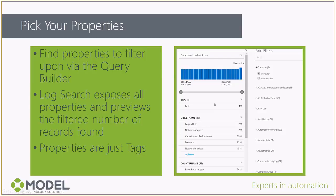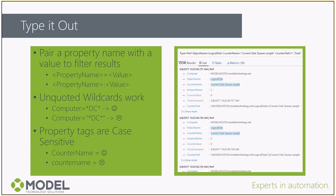The sidebar recommends a list of properties. If the property you're looking for isn't there and you can't recall how it's spelled, there's an Add button that pulls up the full list of filters. As we pick our properties and add them to the filter, we're building out our query. If we want, we can also just type it out directly.